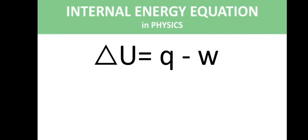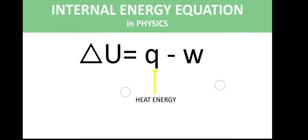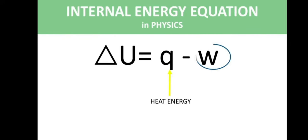Let's go back to the equation for internal energy: delta U is equal to Q minus W, where Q represents the heat energy that flows in and out of the system, minus the work done by the system. Every time work is done by the system, the system has to spend energy to do that work, so the internal energy decreases. That is why work is negative.